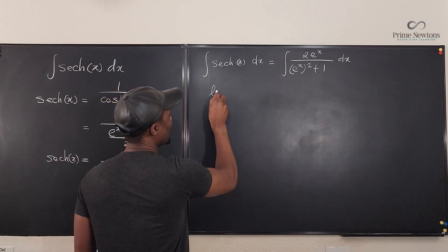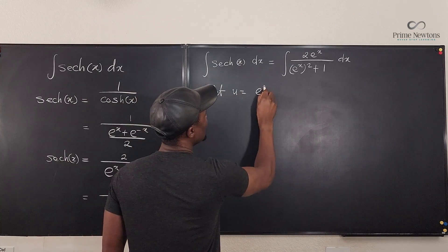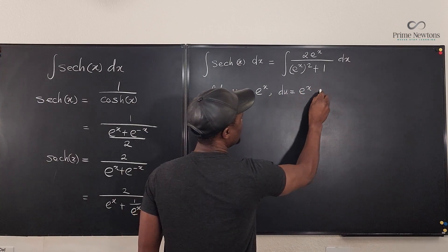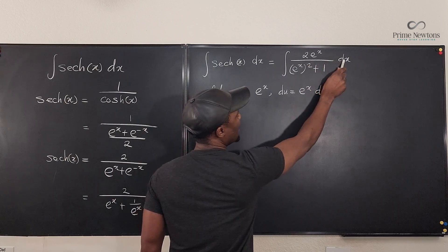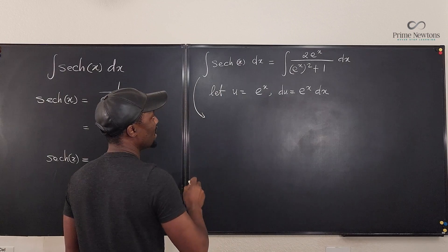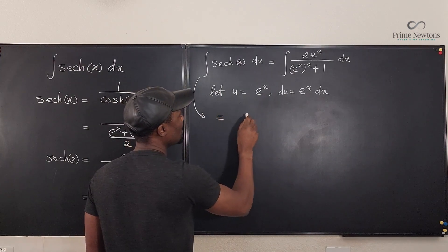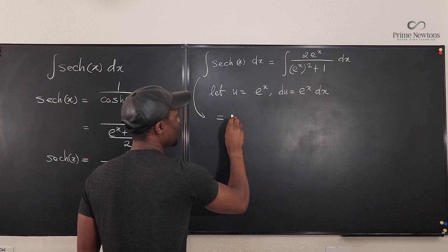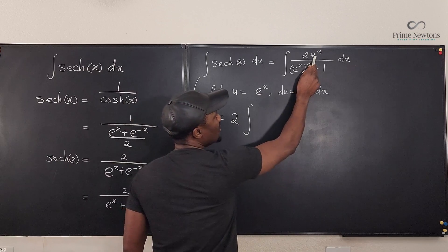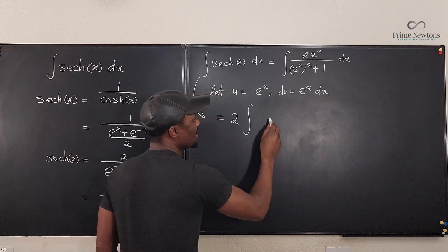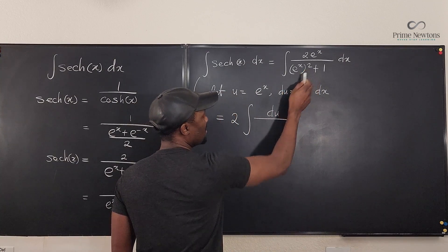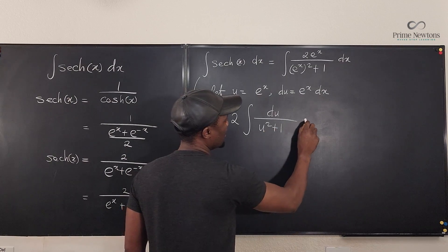So I say let u be equal to e to the x such that du is equal to e to the x dx. And I have e to the x dx here, right? So it means this integral, when it comes down here, I have it to be equal to - I can pull this 2 to the back - so I have 2 times the integral of, now, e to the x dx will be replaced by du. So I have du on top, and under I have u squared plus 1. Nice.